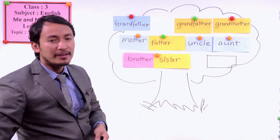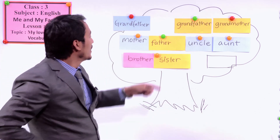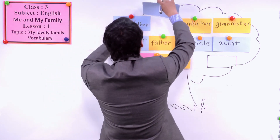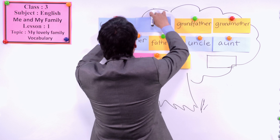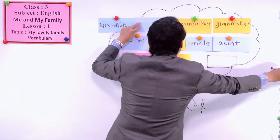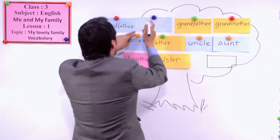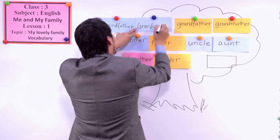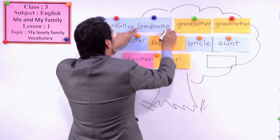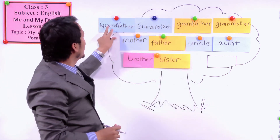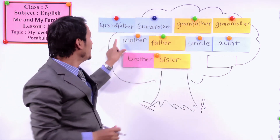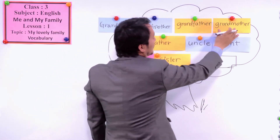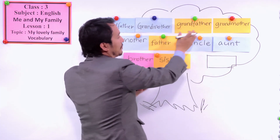How is it so? Because our mother also has father and mother, right? So here you can put grandmother. You have grandfather and grandmother from your mother's side, and grandfather and grandmother from your father's side.